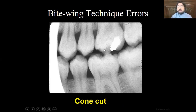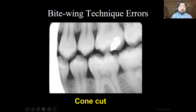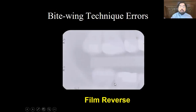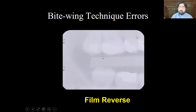Cone cut is another significant error. If the X-ray cone is not properly directed, you miss part of the image — for example, the canine area may not be captured. You have placed your X-ray cone only up to a certain level and missed part of the film, generally caused by placing the cone in the wrong direction. Film reversal does not happen often with digital X-rays, but with conventional film, if placed on the reverse side, there will be no image.